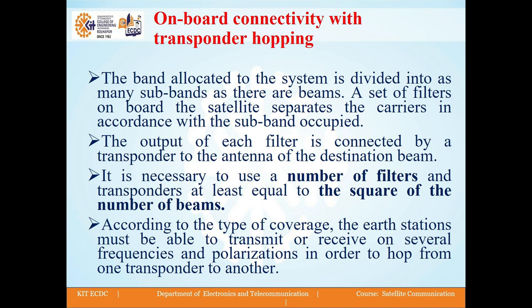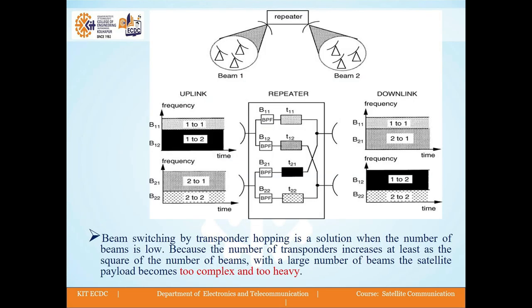According to the type of coverage, the earth stations must be able to transmit or receive on several frequencies and polarizations in order to hop from one transponder to another. Here we have a diagram which shows a repeater sending signals to earth stations or receivers on the ground. Beam 1 is the signal received by one part of the receivers, and beam 2 is the signal received by another group of receivers. This repeater includes filters, and in uplink and downlink we have different bands.